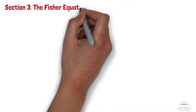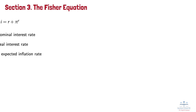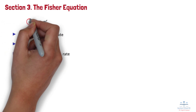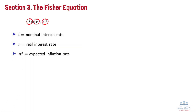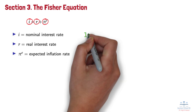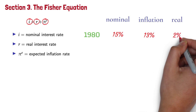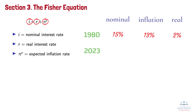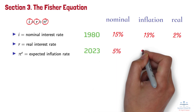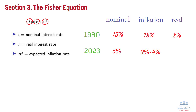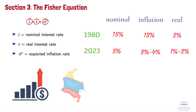To really understand interest rates, we need to look at the Fisher equation. It shows that the nominal interest rate equals the real interest rate plus the expected inflation rate. Let's use a real-world example. In 1980, the United States experienced extreme economic conditions with nominal interest rates around 15% and inflation also extremely high at around 13%, which meant the real interest rate was only about 2%. Compare this to 2023, where nominal interest rates are around 5%, inflation is around 3% to 4%, and the real interest rate is closer to 1% to 2%. This equation explains why countries with high inflation, like Colombia, have much higher nominal interest rates compared to countries with low inflation, like Switzerland.